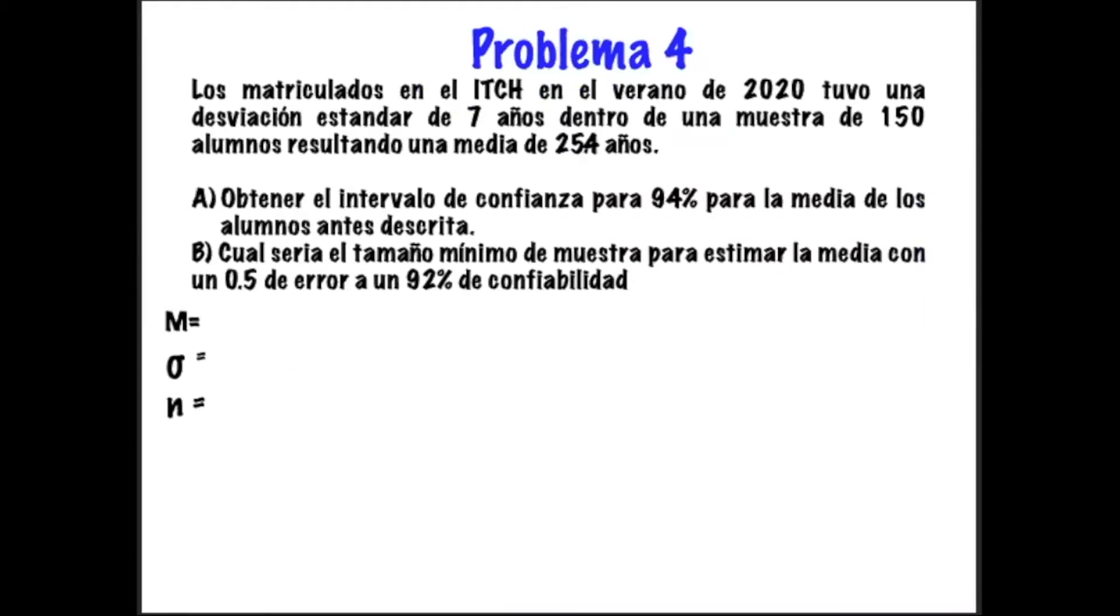Y el problema 4 nos dice así. Los matriculados en el ICH en el verano del 2020 tuvo una desviación estándar de 7 años dentro de una muestra de 150 alumnos, resultando una media de 25.4 años.